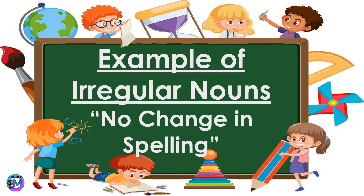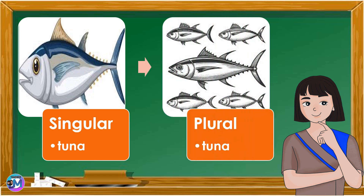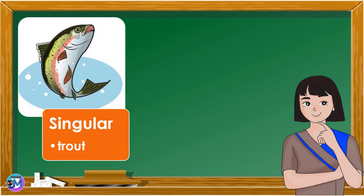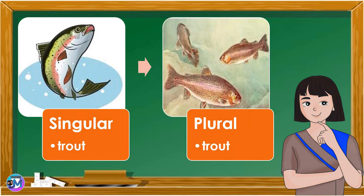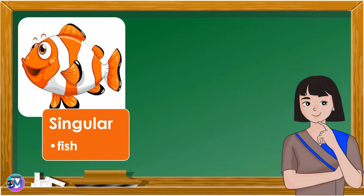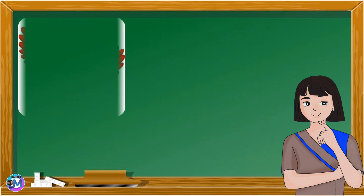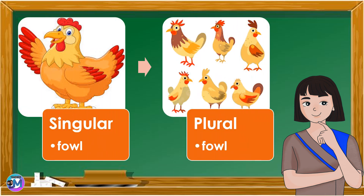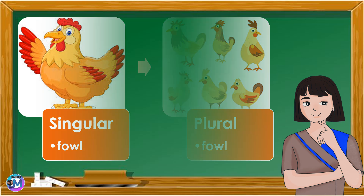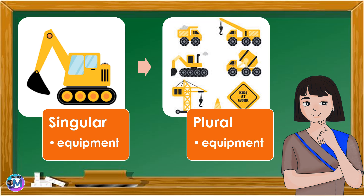Now let's look at examples of irregular nouns with no change in spelling. Singular and plural noun are the same: Tuna. Singular and plural noun are the same: Fish. Singular and plural noun are the same: Equipment.